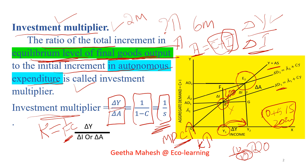If savings are more — meaning MPC is lower — then consumption expenditure is lower and the effect of the multiplier is also lower.